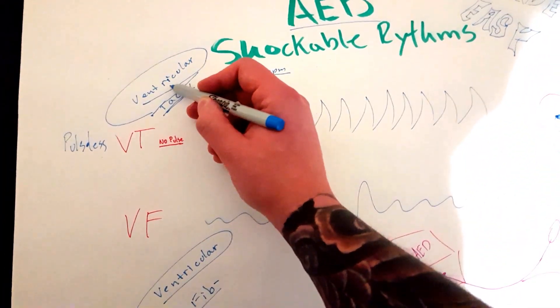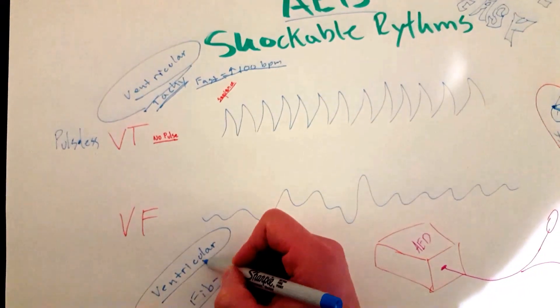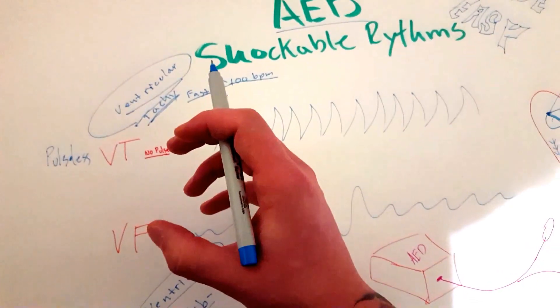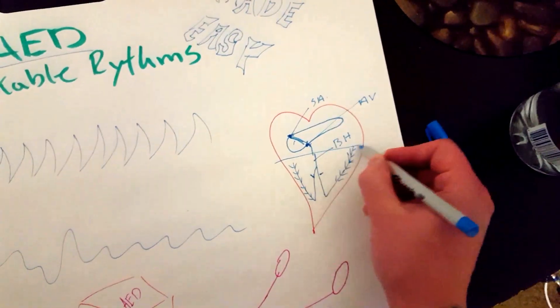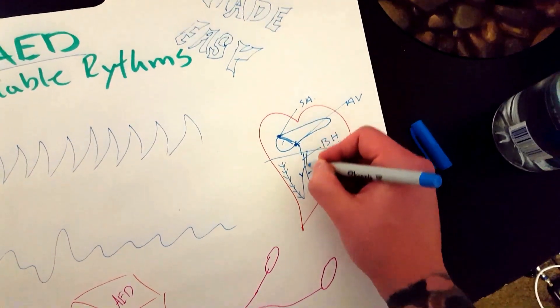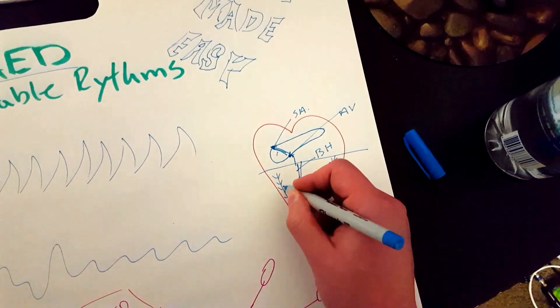So this tells you right here, ventricular, that the core of the issue is going to be in the ventricles. The ventricles are the bottom half, the bottom chambers of the heart, right here and right here.